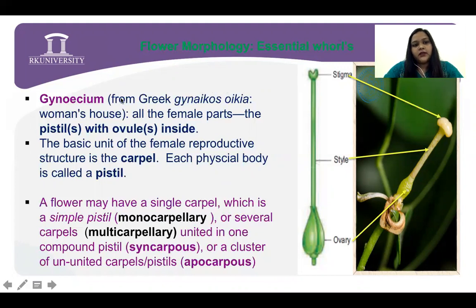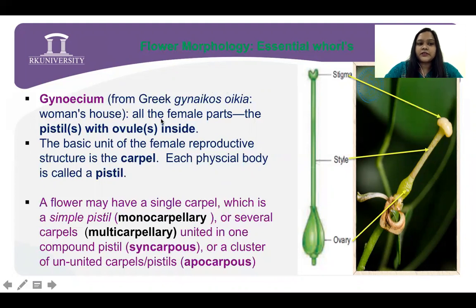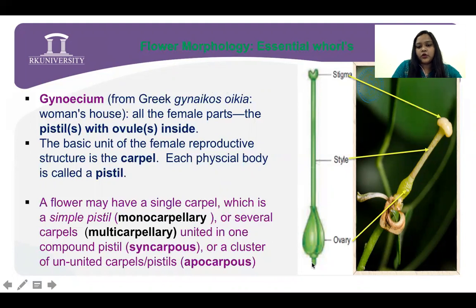Now the next important essential whorl — the innermost whorl of the flower — is gynoecium. This word is also taken from Greek: gynoecium means woman's house. The all-female part of the pistil is the pistil with ovule inside. The gynoecium is in common terms called pistil, and it is divided into three parts.